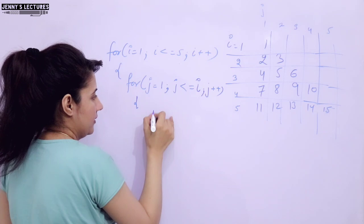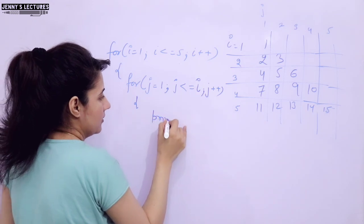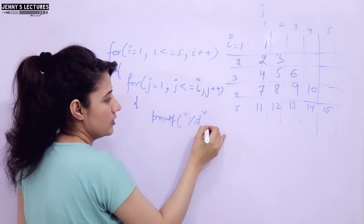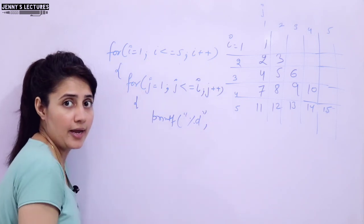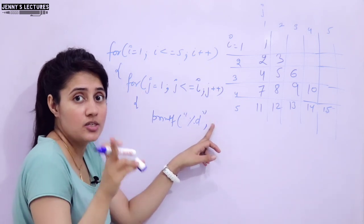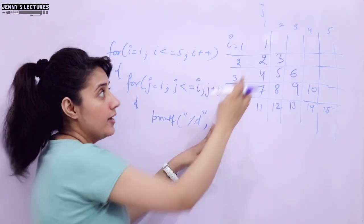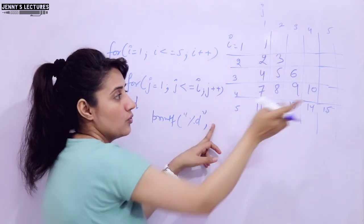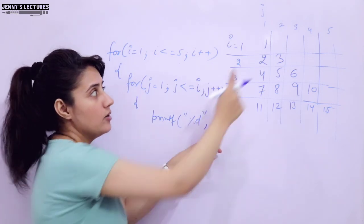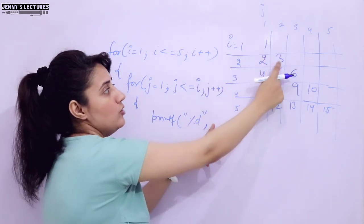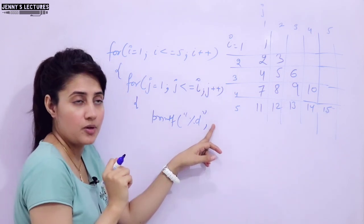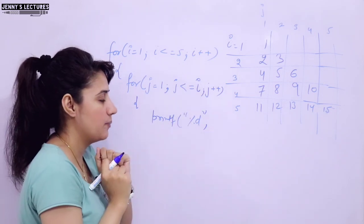Now here, what will we print? We will print using %d since it is an integer value. We cannot print I — if you print I, as discussed in the previous video, the output would be 1, 2 2, 3 3 3, 4 4 4 4, like that. If you write J, you get 1, 1 2, 1 2 3, 1 2 3 4. Both those patterns have been discussed. Neither I nor J can be printed here.